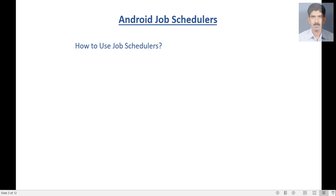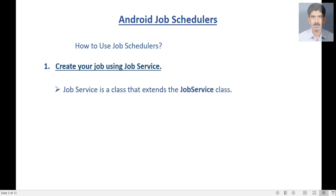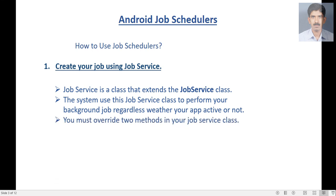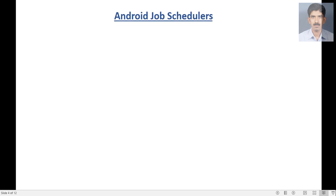Now we can learn how to use Job Schedulers in an Android application. The first step is to create a service that extends JobService. JobService is a class that extends the JobService class. The system uses this JobService class to perform your background job regardless of whether your app is active or not. You must override two methods in your JobService class: the first one is onStartJob, and the second one is onStopJob.